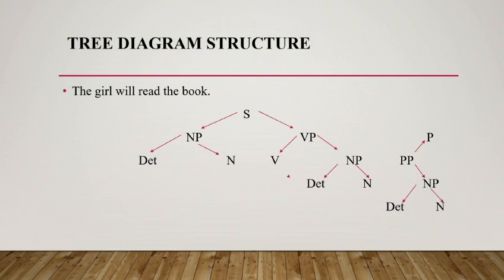In the sentence 'the girl will read the book': 'the' is a determiner, 'girl' is a noun, 'will' is an auxiliary verb, 'read' is a verb, 'the' is an article or determiner, and 'book' is a noun. This is the tree diagram structure.